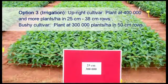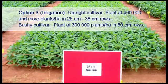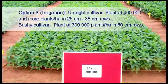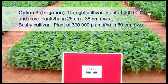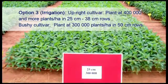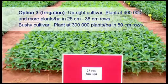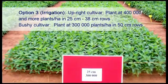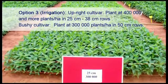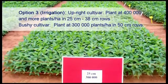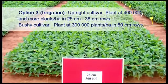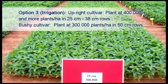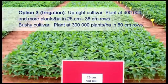With upright cultivars, plant soybeans under irrigation at a density of 400,000 and more plants per hectare in 25 to 38 cm rows. With a bushy type cultivar, plant 300,000 plants per hectare in 50 cm rows.